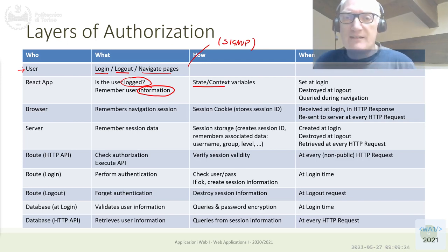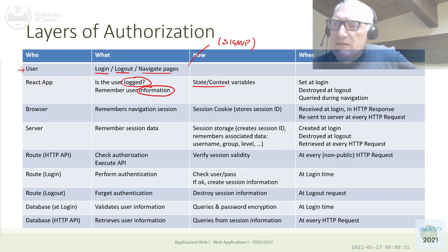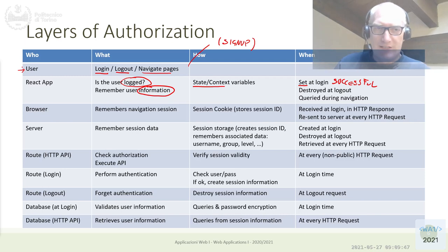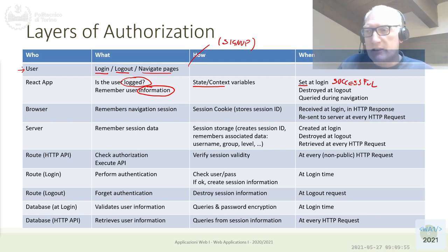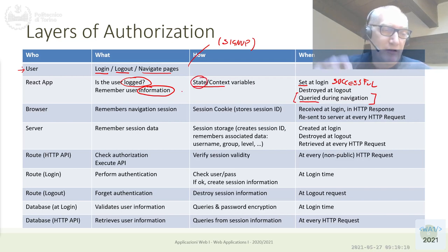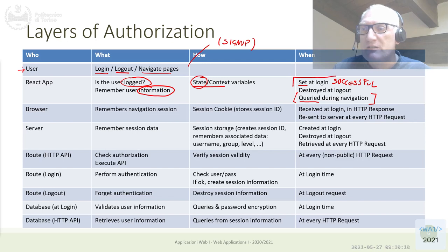The component managing the logged-in user state will also typically be a context provider, so every other component in the application can access it. This state variable must be set the first time when login is successful — if login fails, we don't set any user information — and must be destroyed when the user logs out. During navigation you must query and use this information, which is straightforward because it's just using the state variable wherever needed.